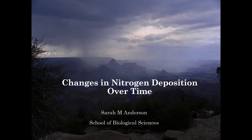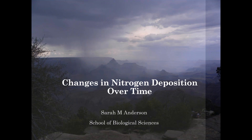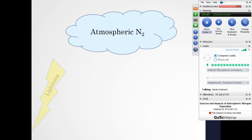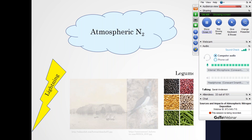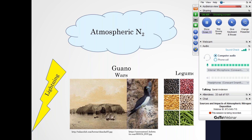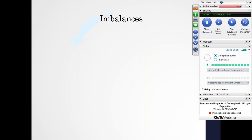Hi Liz, thank you so much for that introduction, and thank you all for joining us today. I'm very excited to share some of my dissertation research focused on understanding changes in nitrogen deposition over time. As a bit of background: historically, nitrogen has been a very limiting element to growth — it's been tied up in the atmosphere in the unreactive form of N2. Prior to about a century and a half ago, there were really only two ways for that unreactive form to become a reactive form usable by life: via lightning and via biological nitrogen fixation by bacteria in symbiosis with legume plants.